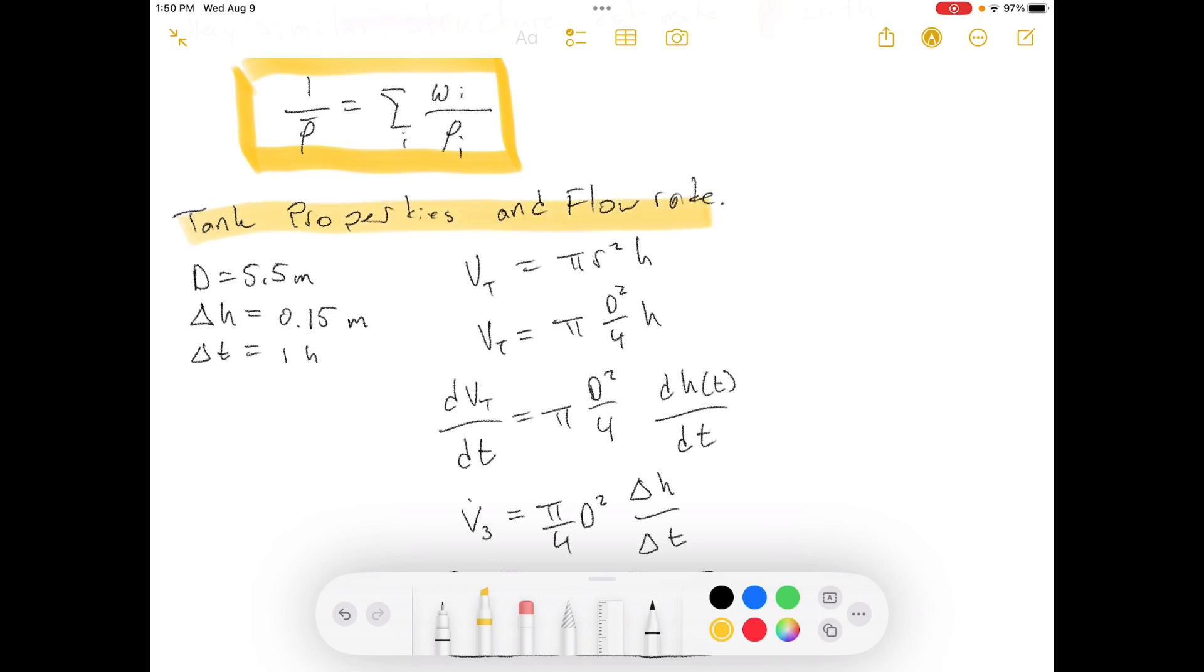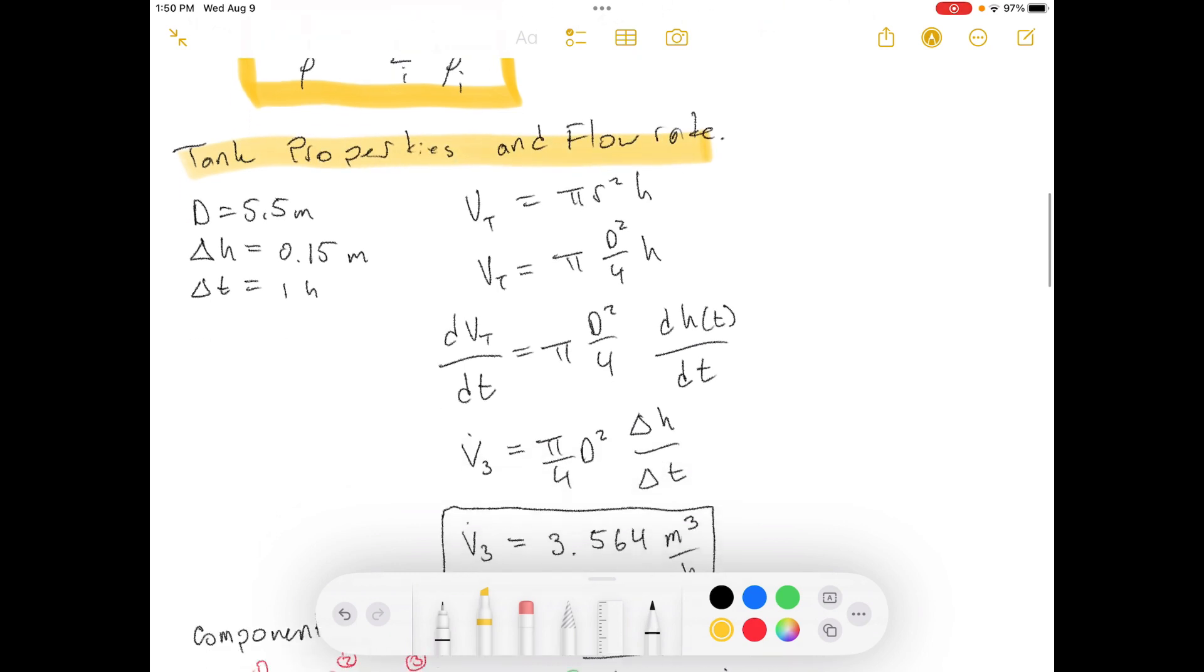So, these are the tank properties and the flow rates. We've got our tank property here. This is the volume in the tank. The volume in the tank is equal to pi r squared times the height of the liquid. So, volume of the tank. They give us the diameter of the tank. So, I'm going to change this r into a diameter. So, this changed into this.